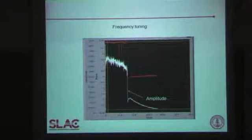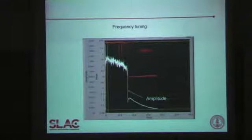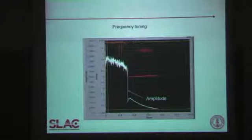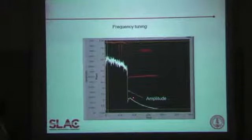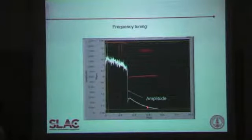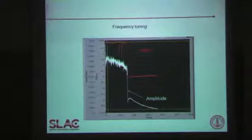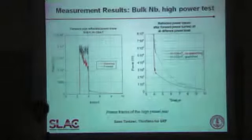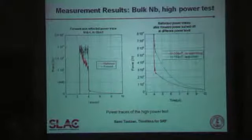If the cavity is off frequency, the line goes one way or the other, and by fitting that line to a straight line we understand the difference in frequency and correct it. The amplitude decay at the end of the cavity after everything shuts down is what we fit to understand the quality factor of the cavity, and that's how we sense the quenching.